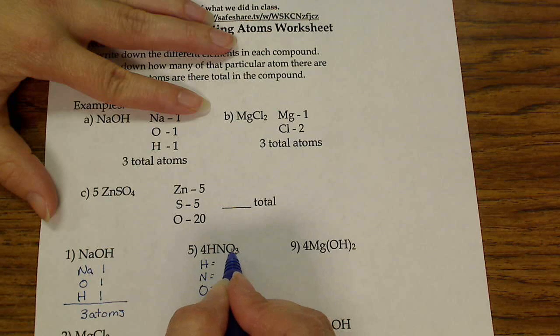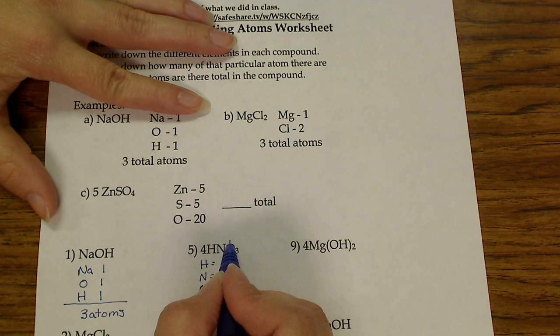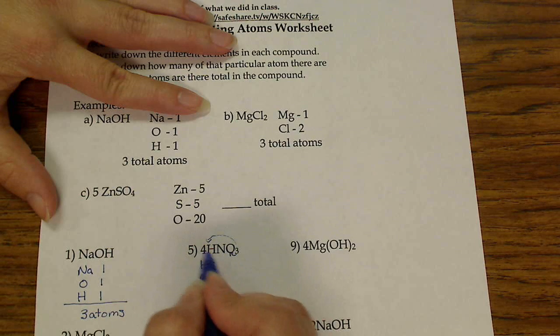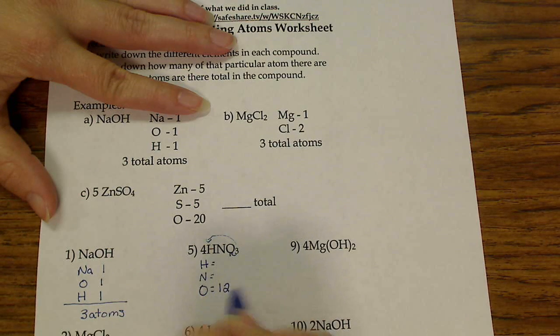So three oxygens times my coefficient. I have to multiply it by the first number. So three times four is twelve oxygens.